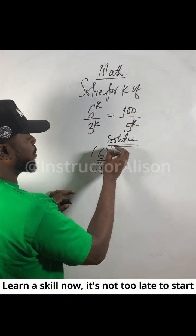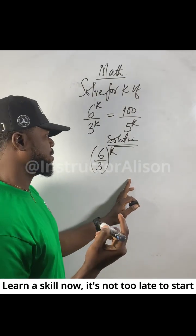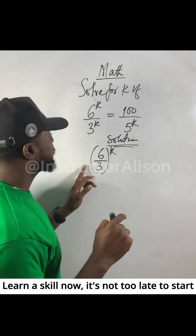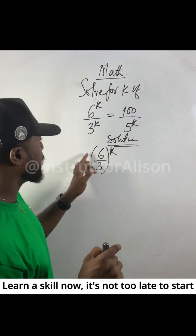According to the division rule, when you have the same power, you just divide the bases. Six divided by three, so this is the same thing as that.